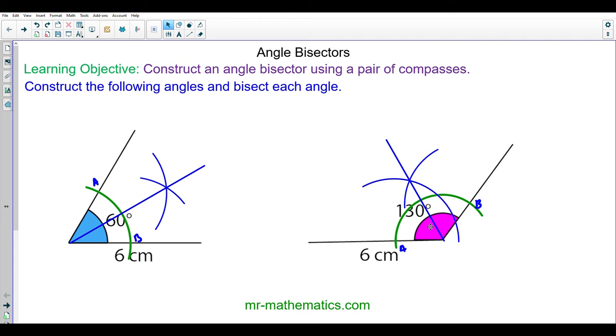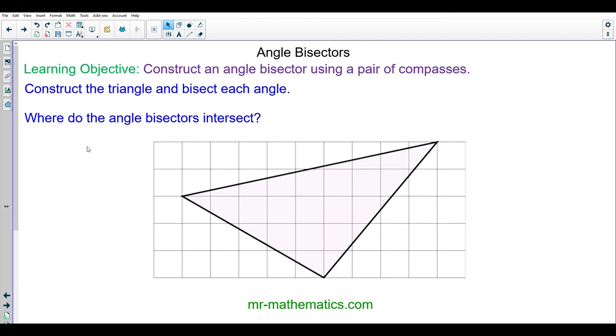Let's try my final question. We're going to construct an angle bisector of each angle in this triangle and then we will see where they intersect. Do you want to pause the video to try it yourself and resume it when you're ready?